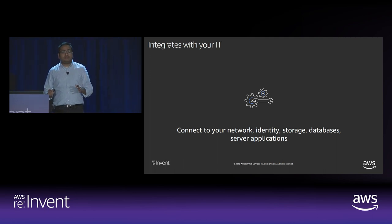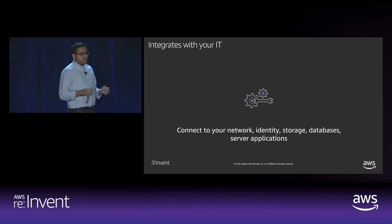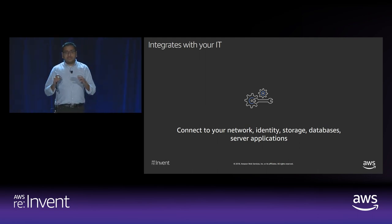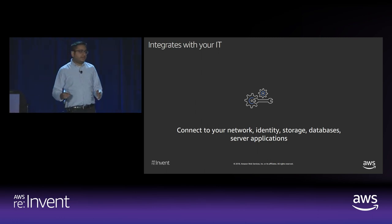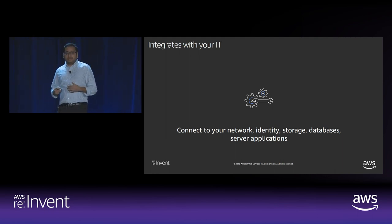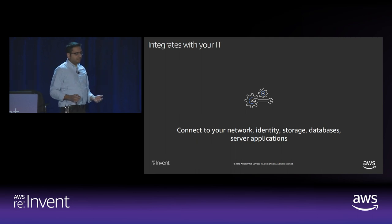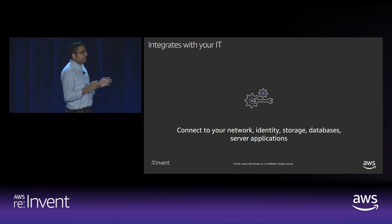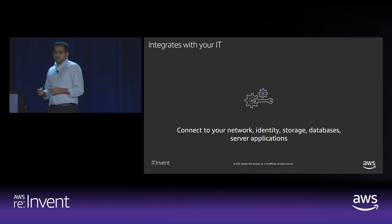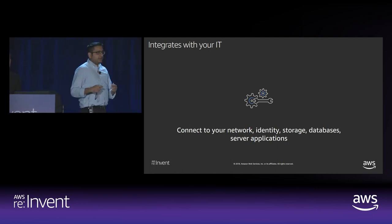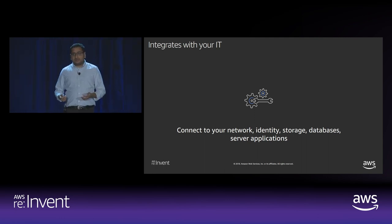AppStream seamlessly integrates with your existing IT environment — you don't have to migrate or change anything. AppStream instances are attached to your VPC, meaning your applications have access to network resources such as file shares, database servers, and licensing servers accessible through your VPC. You can connect your VPC to your on-prem data center using VPN, peering, or AWS Direct Connect. AppStream provides a range of identity options that enable seamless authentication and authorization using existing credentials. Active Directory integration is also available — AppStream instances can be standalone or joined to a domain, giving applications access to domain resources like network printers, domain-based file shares, and internet sites relying on domain credentials.